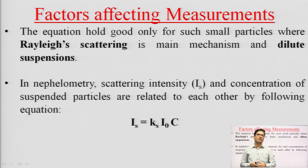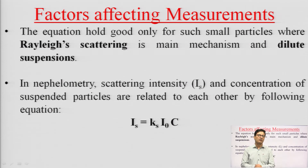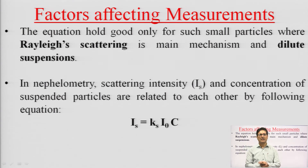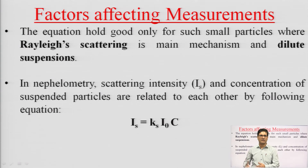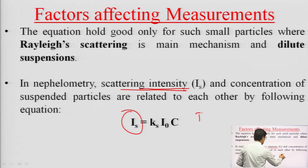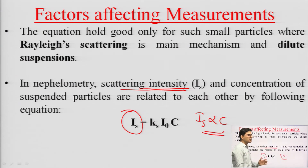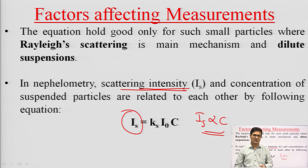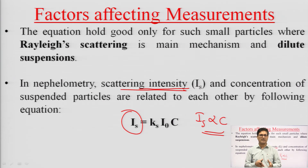This equation holds good only for small particles where Rayleigh scattering is the main mechanism, and for dilute solutions. In nephelometry especially, when the solution is very dilute, this law is most suited — similar to Beer's Law, which is also applicable to dilute solutions. As concentration increases, other mechanisms may also participate in the loss of light. Scattering intensity in nephelometry is also related to concentration: higher particle concentration means more scattering and higher scattered light intensity.